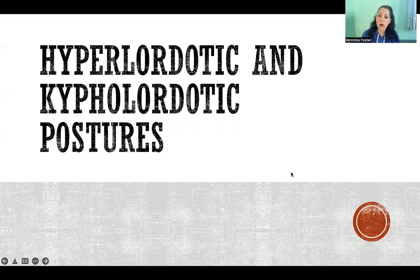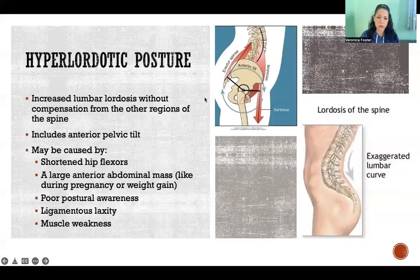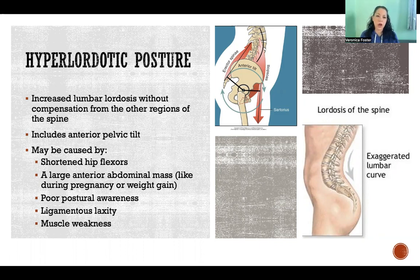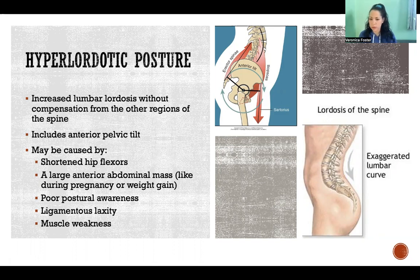In this video, I'm going to talk about hyperlordotic and kypholordotic postures. They're very similar, but the key difference is that in hyperlordotic posture, we have increased lumbar lordosis that does not cause compensation of the other regions of the spine. In hyperlordotic posture, there is exaggerated lumbar lordosis — the curve in the lumbar spine is exaggerated beyond normal neutral position.